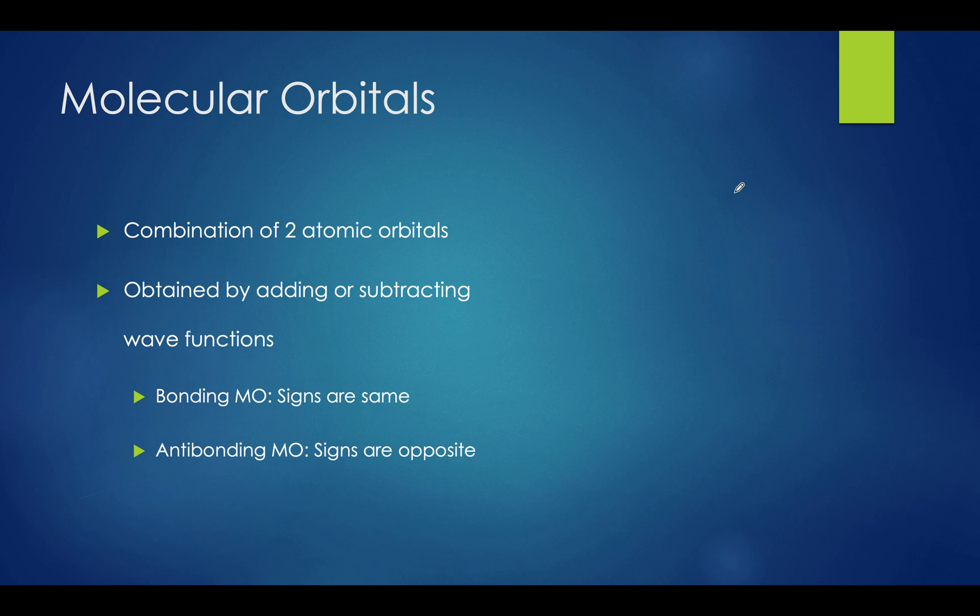Next up, we have the concept of molecular orbitals. This is when two atomic orbitals combine. By adding or subtracting wave functions, we can create different kinds of molecular orbitals. If the wave functions have the same sign, being both positive or both negative, we can create a low-energy bonding molecular orbital. Lower energy means that it's more stable. If the signs are different, we get a higher-energy unstable antibonding molecular orbital. Let me show you how these orbitals will look like.